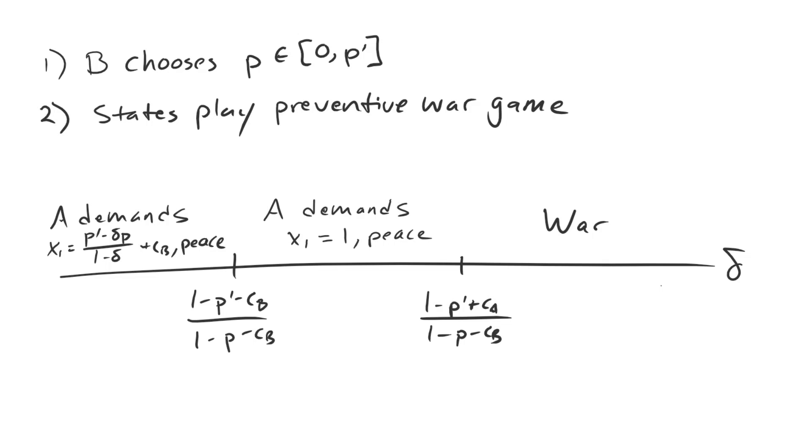This is an example of an endogenous power shift. That word, that prefix, endo, meaning internal to the system. So if we want to study a model with endogenous power shifts, we need to actually give the rising state some sort of control over its balance of power in the future. And this is not a trivial addition to the model. There are reasons to think that this is going to result in something very different than what we've seen before.